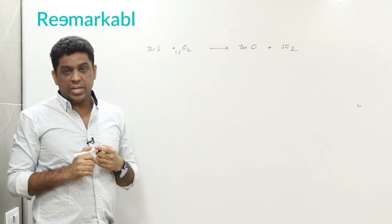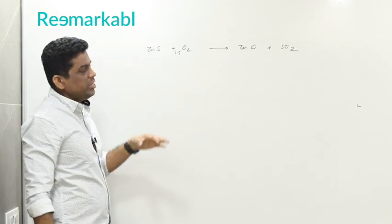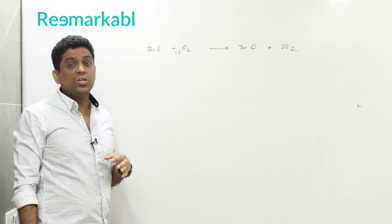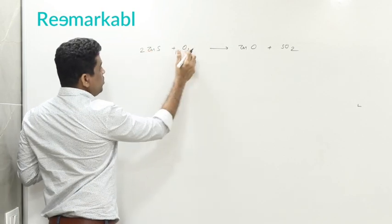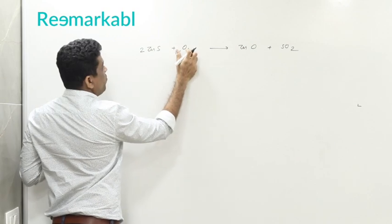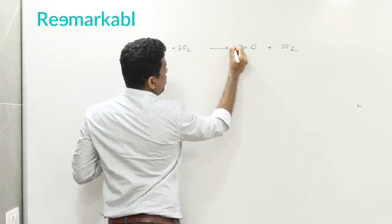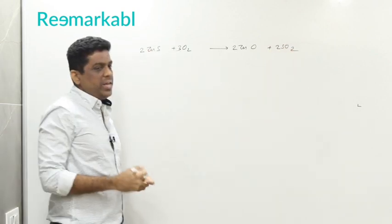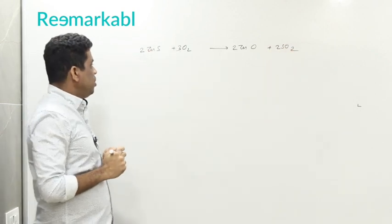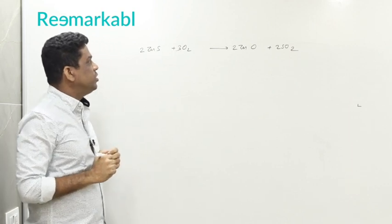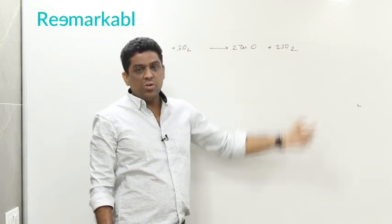At least for 9th and 10th standard, we cannot keep fractions. The easy trick is to multiply the entire equation by 2: 2 ZnS + 3 O₂ → 2 ZnO + 2 SO₂. Now check: two zinc on both sides, two sulfur on both sides, and oxygen — 3 times 2 is 6 on the left; 2 plus 4 is 6 on the right. Equation is balanced.